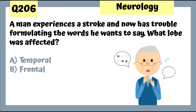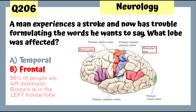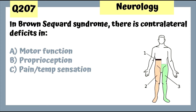Question 206: A man experiences a stroke and now has trouble formulating the words he wants to say — what lobe was affected? This is Broca's aphasia; he has broken speech and is not able to formulate his words. Most people think it's in the temporal lobe — that's a mistake. It's in the frontal lobe. Since 95% of people are left dominant, Broca's is in the left frontal lobe.